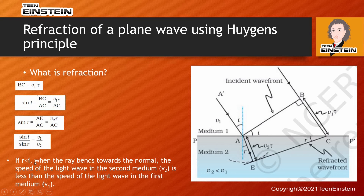What happens if R is less than I? R is the angle of refraction, so if the angle of refraction is less than I, the ray comes closer to the normal. If R < I, from the equation sine I / sine R = V1 / V2, this means V1 is greater than V2 — the speed of light in the second medium is less than the speed of light in the first medium.